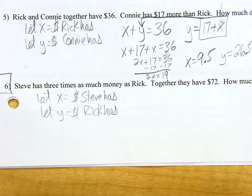If I have two variables, I need two equations. So I'm just going to read: Steve has three times as much money as Rick. That's an equation right there.